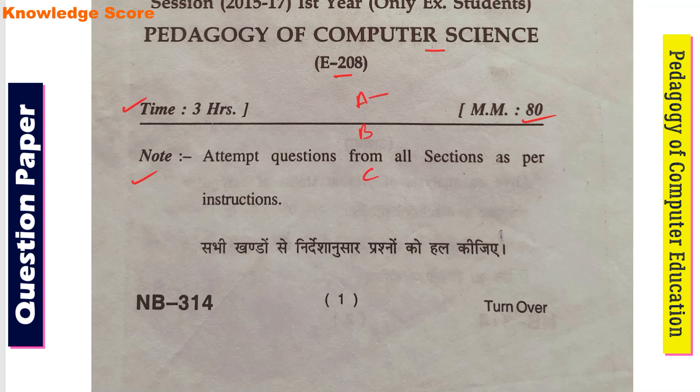Section A contains long answer type questions. Section B contains short answer questions. And Section C contains very short answer type questions. Let's start one by one for each section.